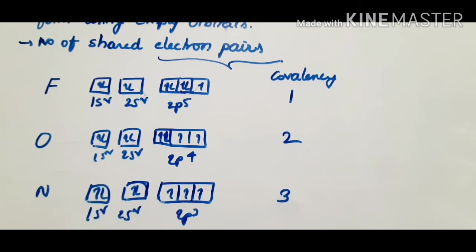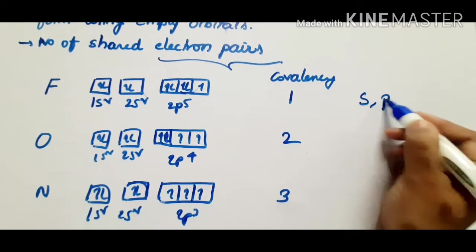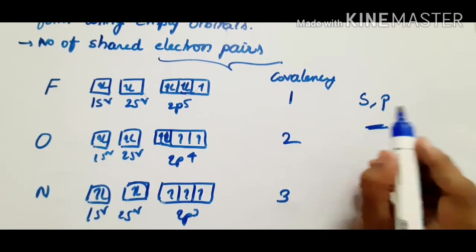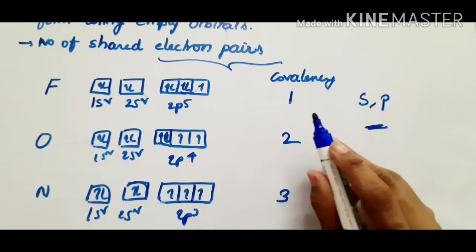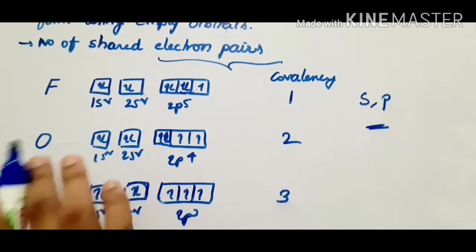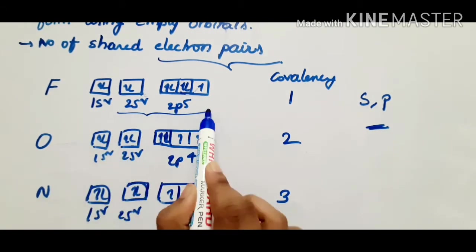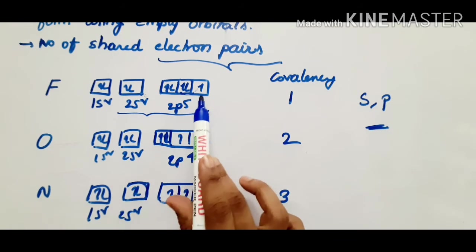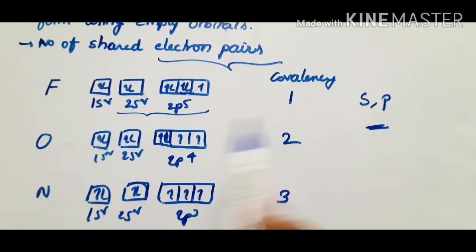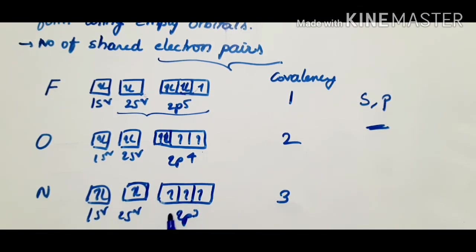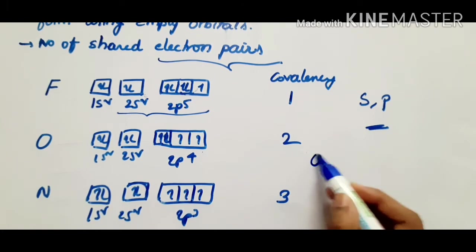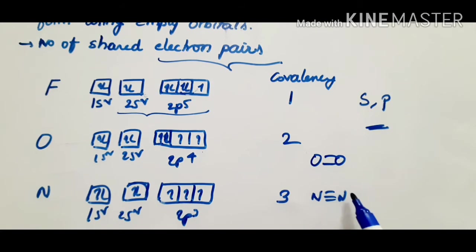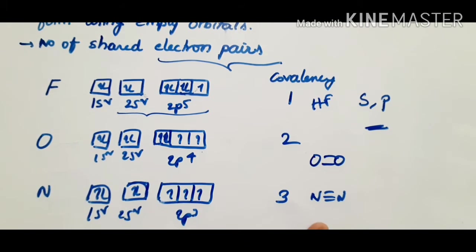Covalency of an element is equal to the total number of unpaired electrons in s and p orbitals. Any single electrons in s and p orbitals equal the element's covalency. For fluorine: 1s2, 2s2, 2p5 — in the p orbitals there is 1 single electron, so covalency is 1. For oxygen, there are 2 single electrons, so covalency is 2. Nitrogen has 3 single electrons, so oxygen can form a double bond and nitrogen can form a triple bond.